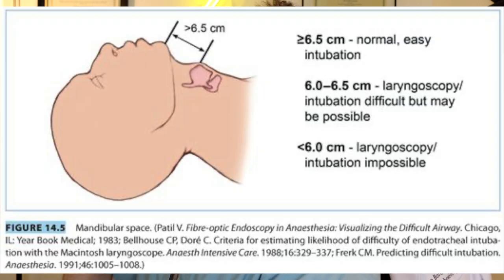Another important pre-op assessment is thyromental distance — the space between the chin and the thyroid cartilage. Mine is a good mid-to-longer range. But if someone has a very short, recessed chin with almost no thyromental distance, that indicates a small mandible, a likely anterior airway, and a difficult intubation.